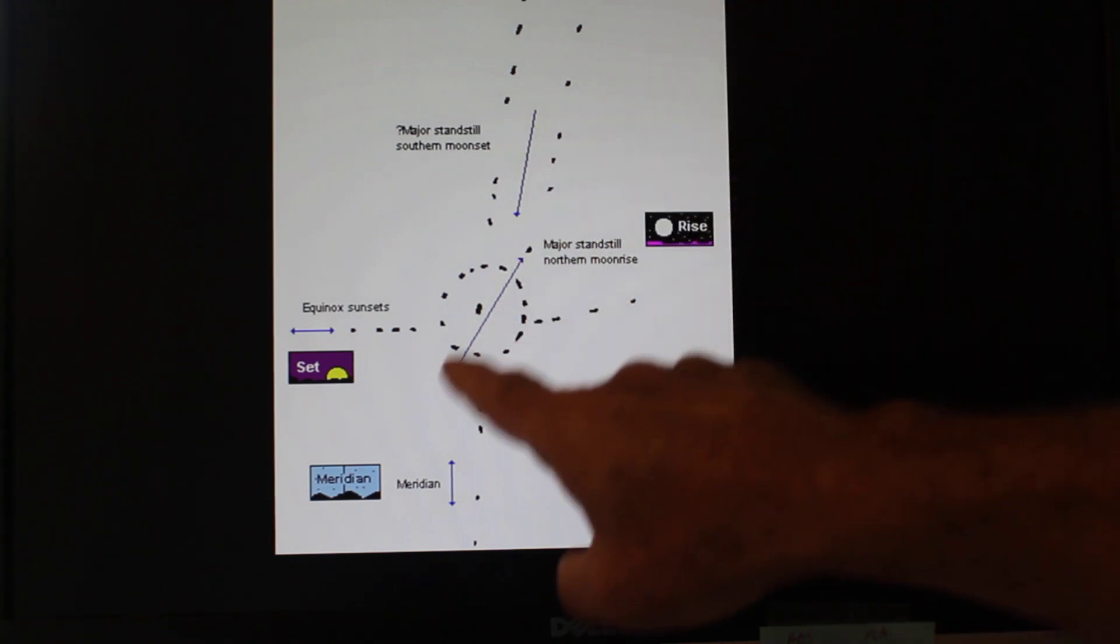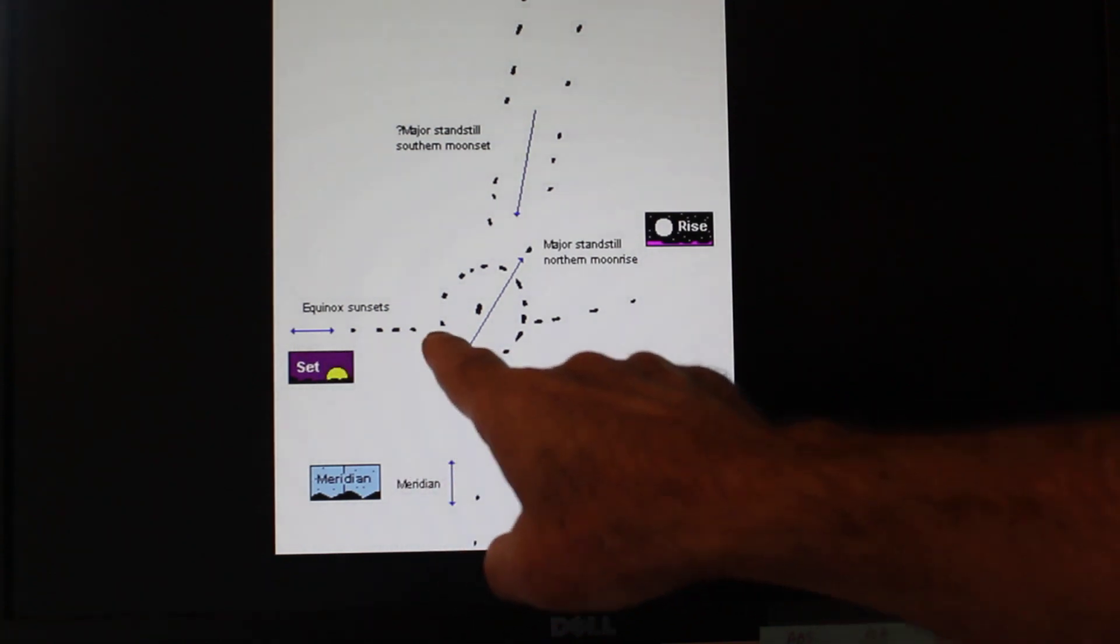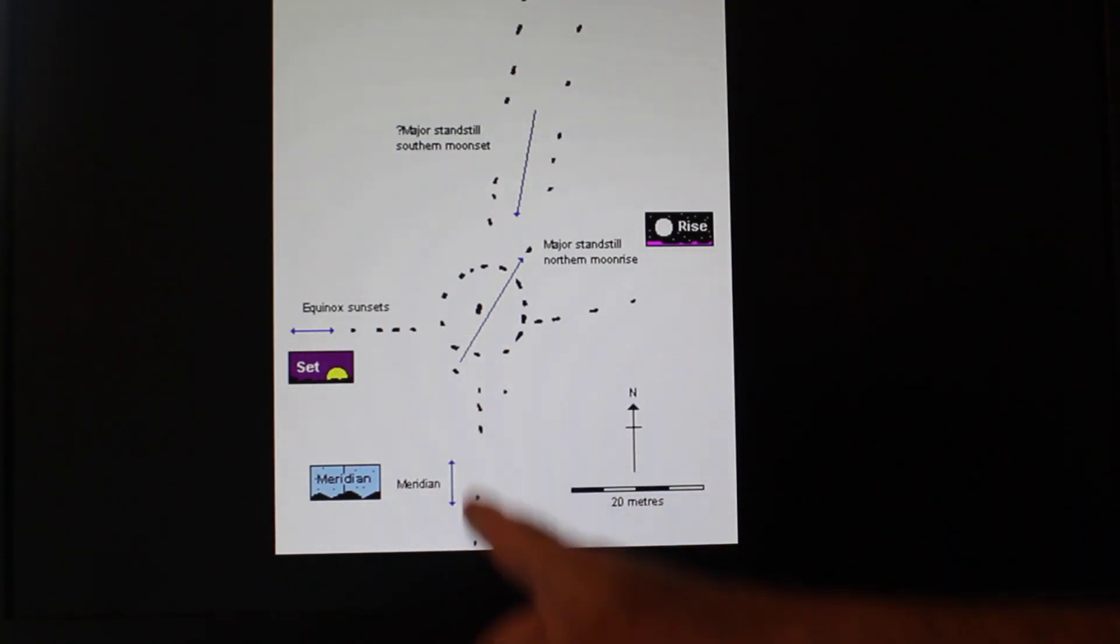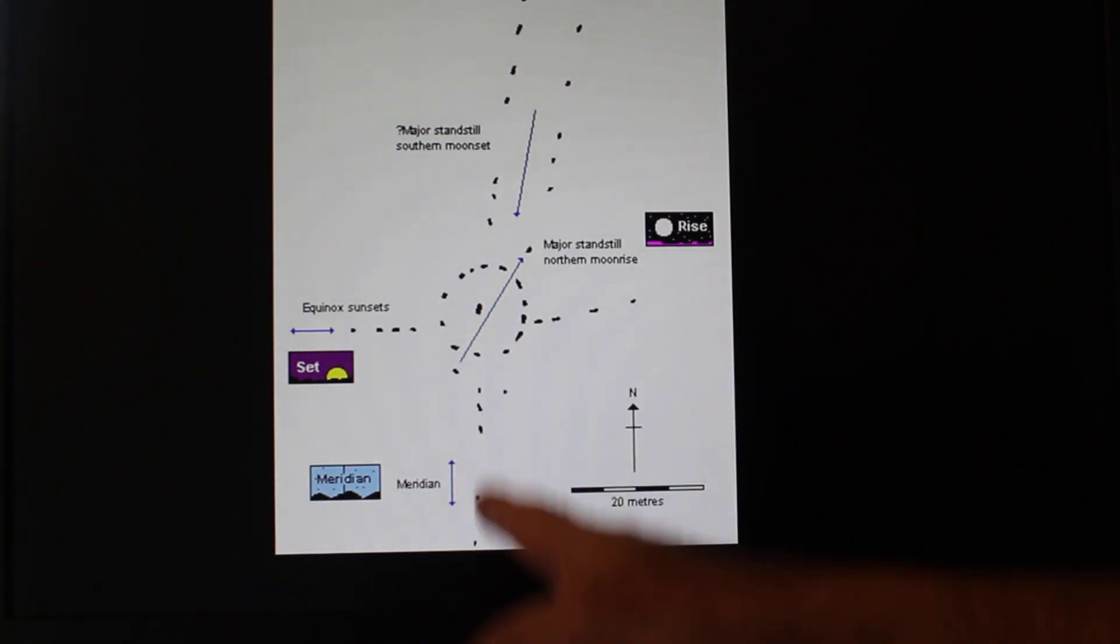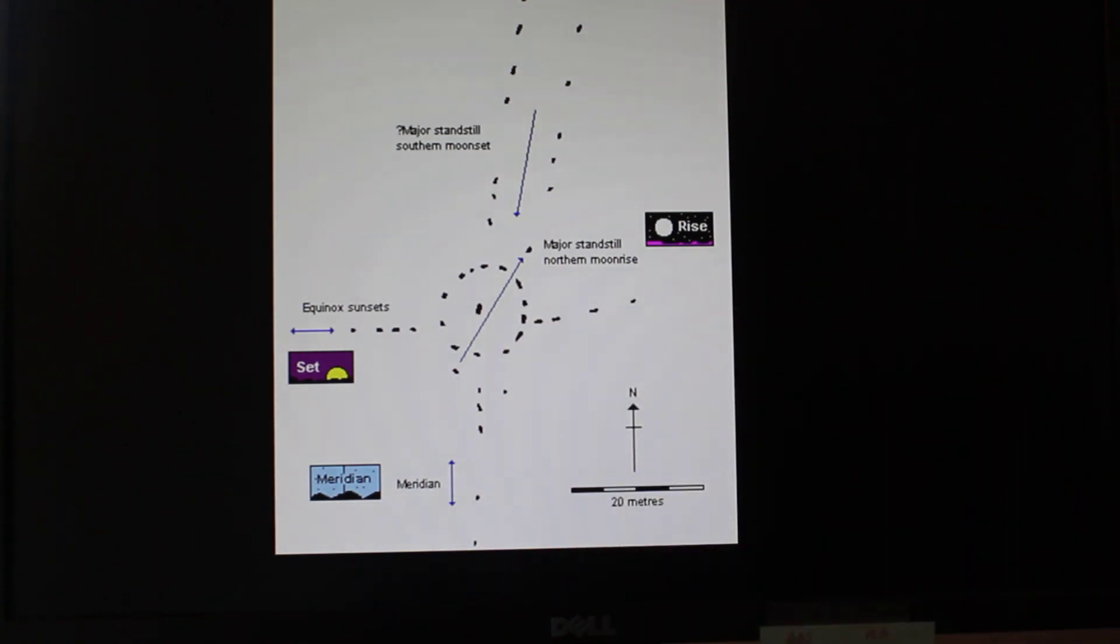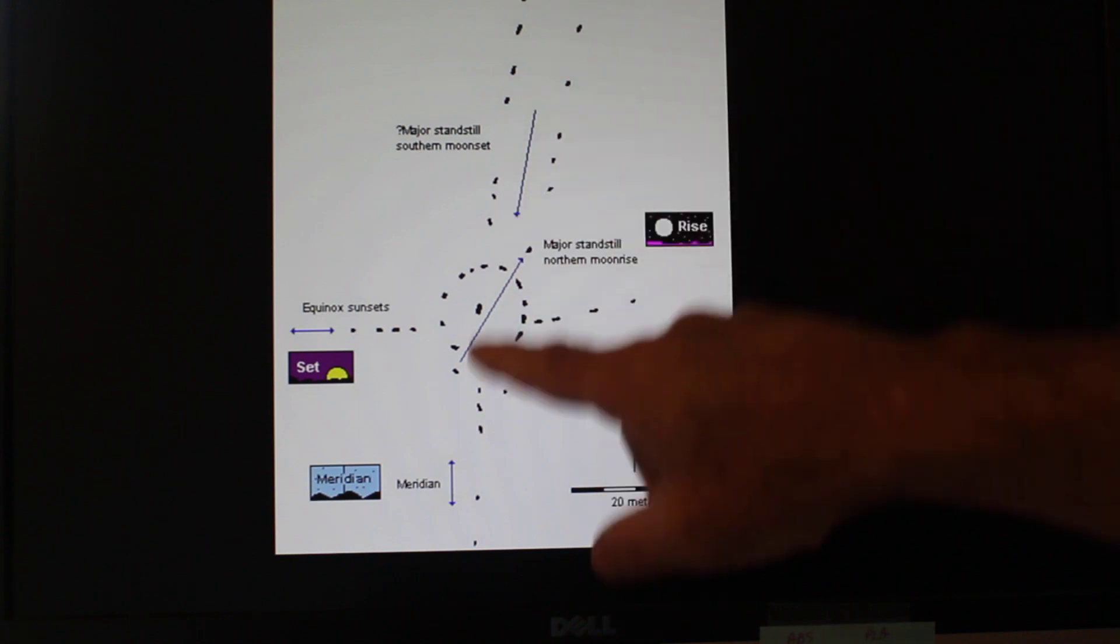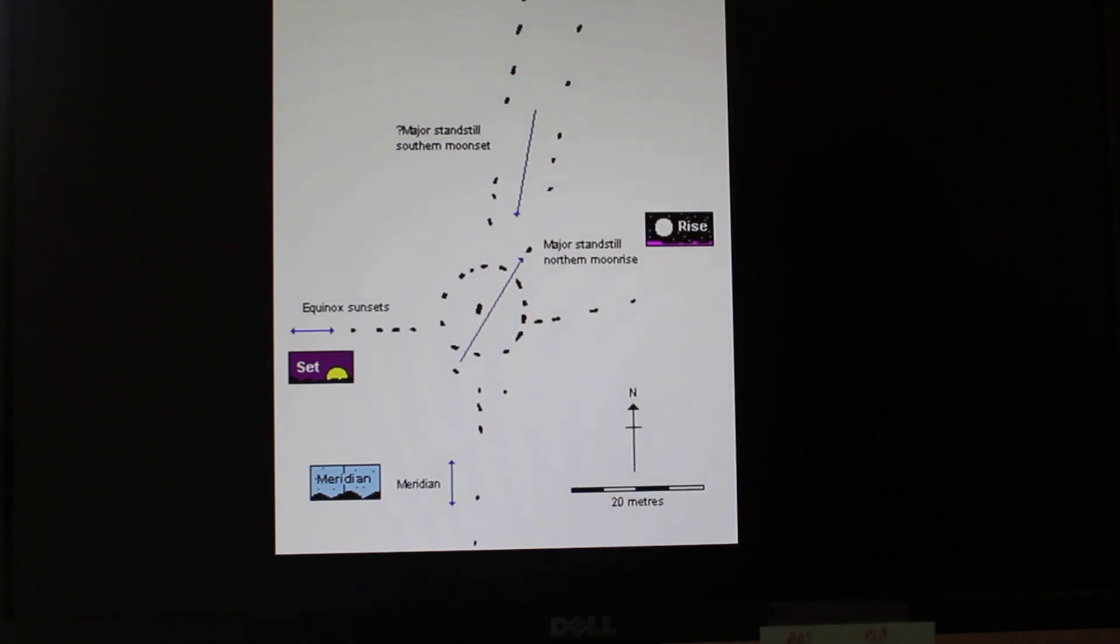So those are interesting. Obviously equinox sunsets because that's an east-west line and this is a meridian wall or meridian line right here. So they definitely knew their astronomy. And then do we have any proof that this had to line up with the moon? No, but it's intriguing.